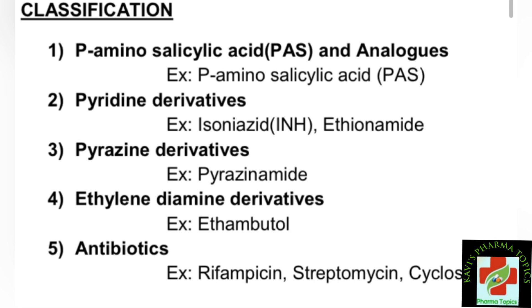The main anti-tubercular drugs include isoniazid, pyrazinamide, and ethambutol. For each, we look at chemical structure, physical properties, stability, and solubility.